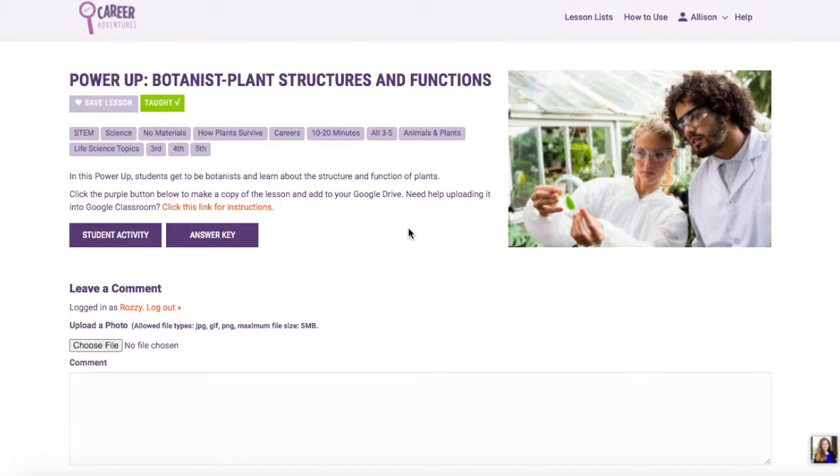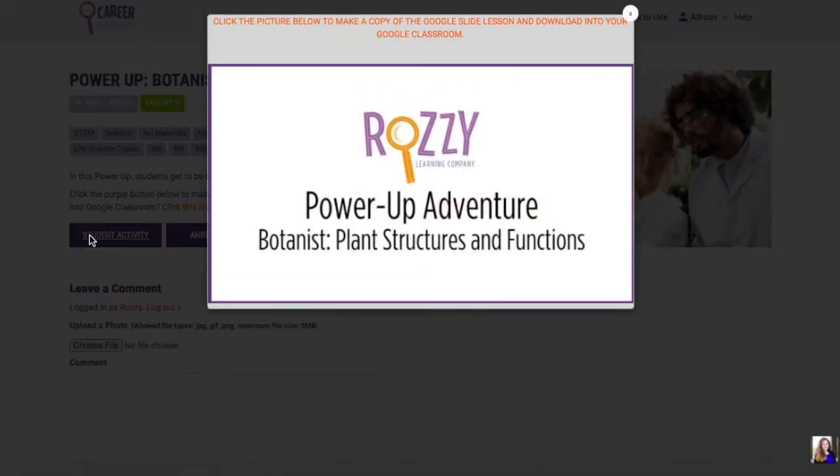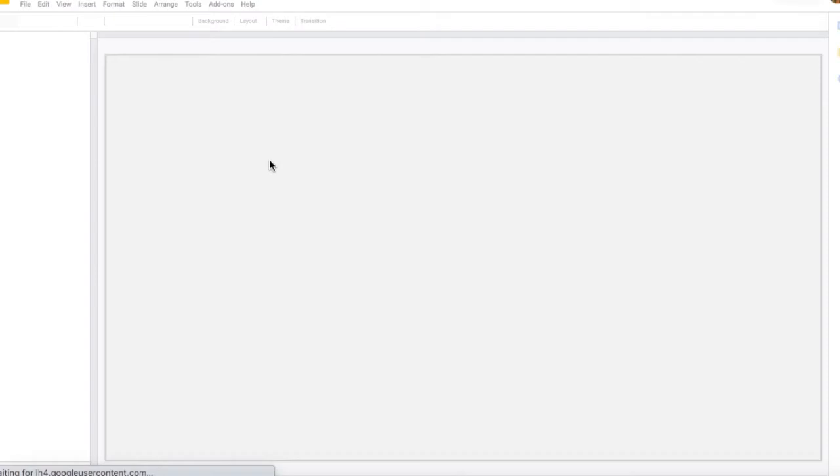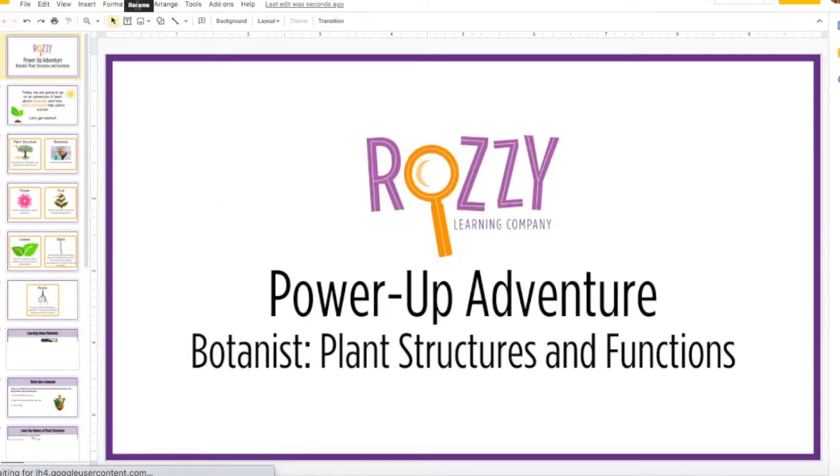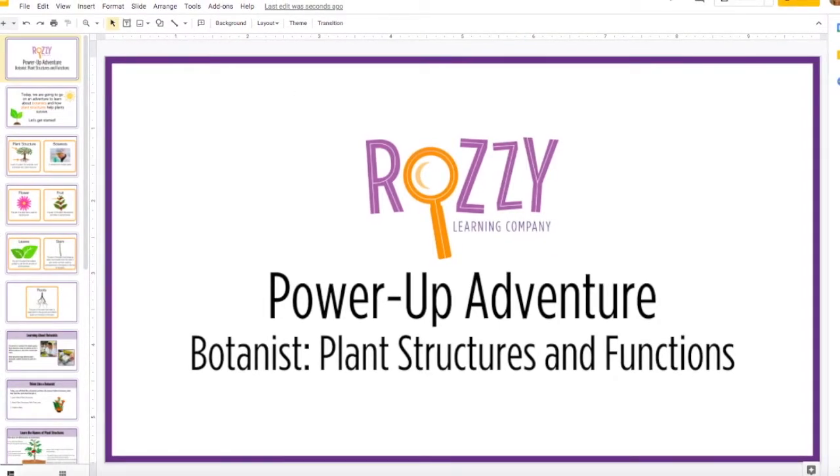So as you can see I am on a power-up page and I'm going to show you how to do that. First I'm going to click into my student activity and download it into my Google Drive. So make a copy here, we are, it's my copy is now in my drive so you can see that.